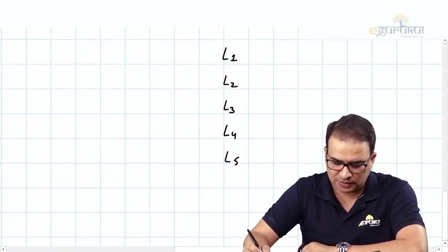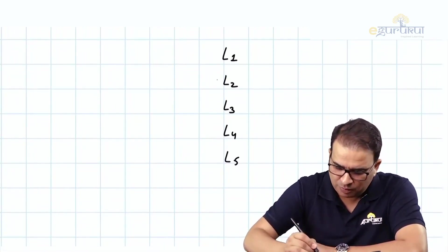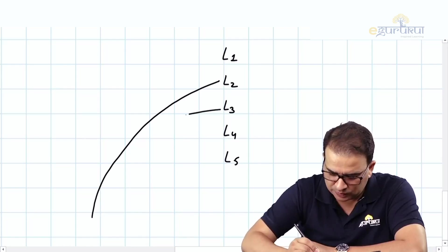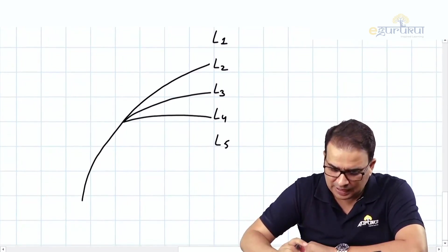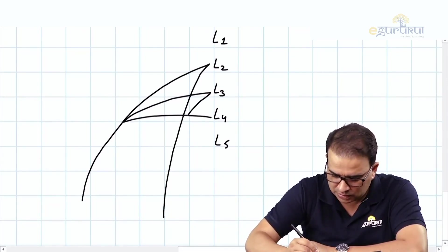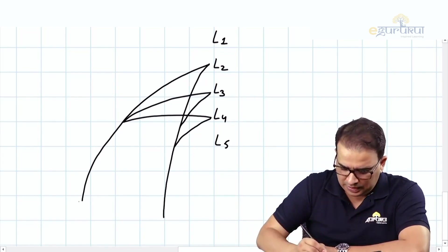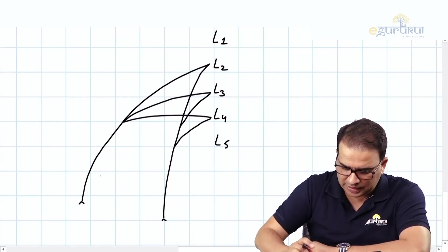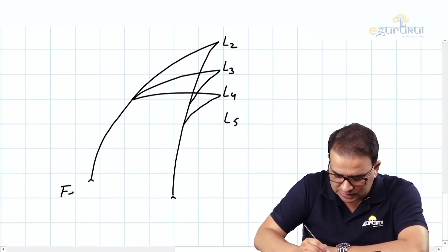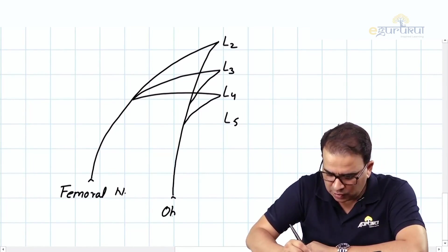The nerve coming from L2, L3, and L4 — I'll draw this schematically. There is one nerve coming from L2, L3, L4 drawn more laterally — that is the femoral nerve. And another nerve also coming from L2, L3, L4 drawn more medially — that is the obturator nerve. So the root value for both nerves is L2, L3, L4.